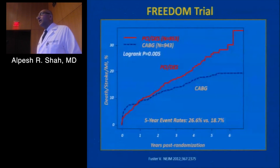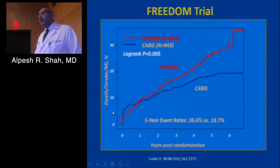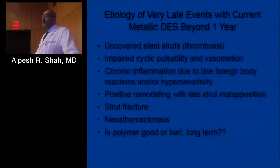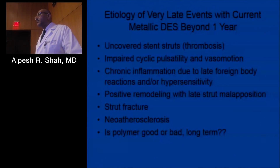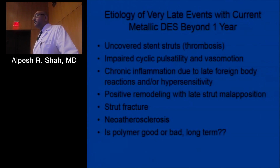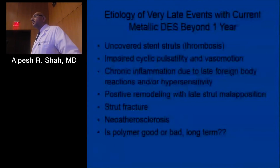Until we innovate, we cannot match coronary artery bypass surgery. The FREEDOM trial and others consistently show a separation: in the first one to two years there's little difference in major endpoints, but beyond that there's a clear divergence — event rates keep climbing in PCI with second-generation DES versus bypass surgery. This widening gap is not serving our patients well. There are certain late issues with metallic DES after the first year: uncovered stent struts leading to thrombosis; permanent metallic scaffolds impairing cyclic pulsatility and vasomotion; chronic inflammation due to the late foreign body including the polymer; and positive remodeling causing late strut malapposition — hanging struts inside the vessel — which in turn causes thrombosis.